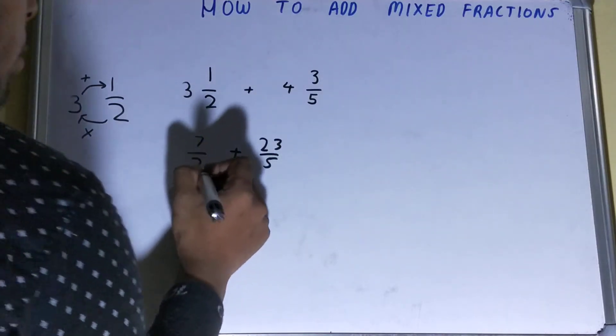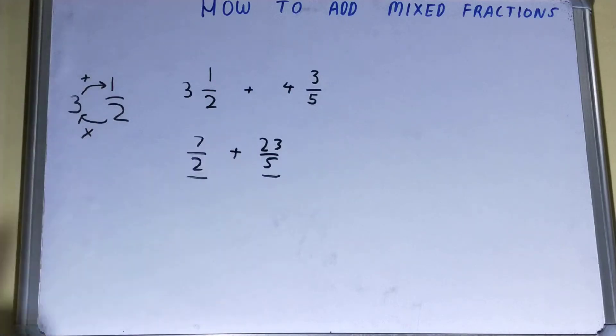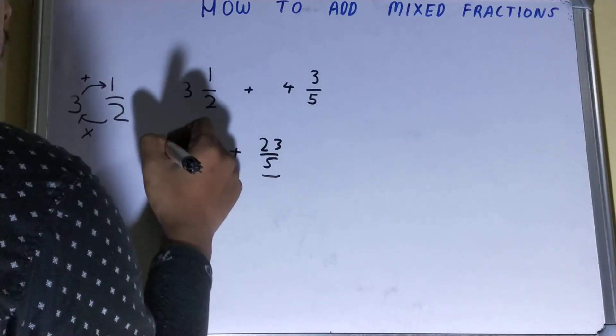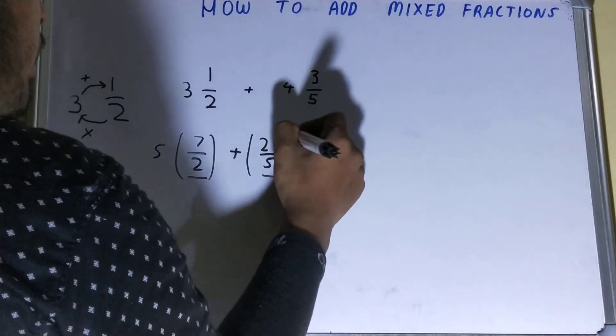Now we just need to add, but the denominator is not matching right now, right? So to match it or to balance it, what we'll do is we'll multiply this by 5 and this by 2.